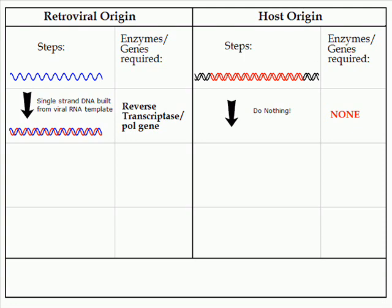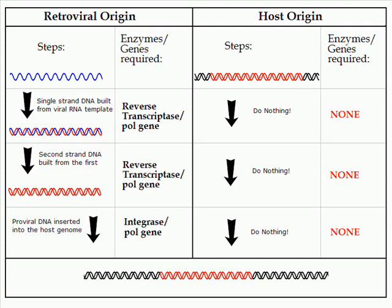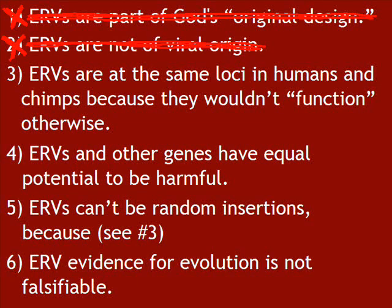POL also encodes the enzyme necessary to integrate the newly formed viral DNA into the host DNA — another unnecessary enzyme if ERVs were part of the host genome to begin with — and it's well-nigh impossible that this gene was part of some original design. So this pretty much knocks out your second assertion. And if ERVs are viral in origin, it knocks out your first as well.